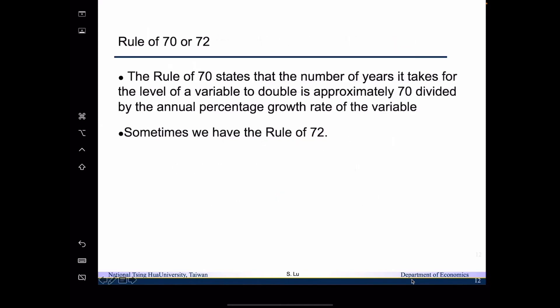Now I want to introduce the concept called the rule of 70 or 72. This rule states that the number of years it takes for a variable to double is approximately 70 divided by the annual percentage growth rate. Using 72 is more precise, but since it is a rule of thumb, using 70 is also acceptable.